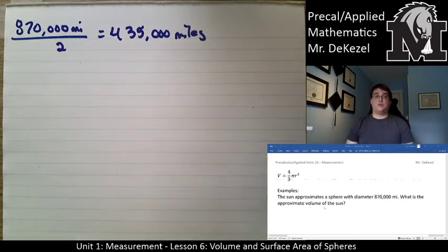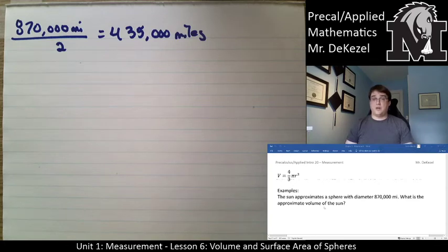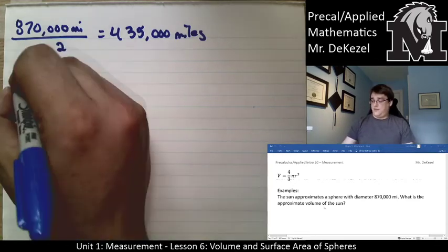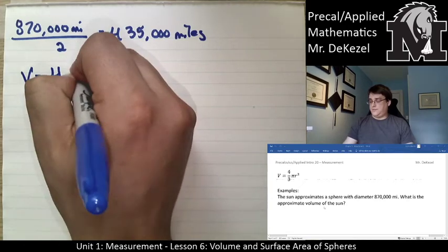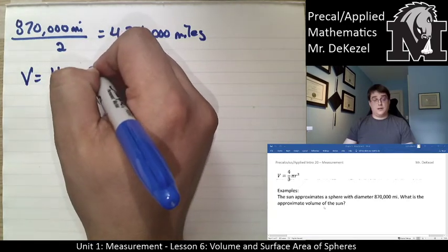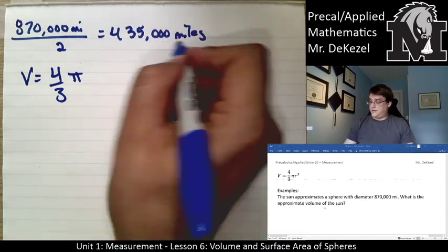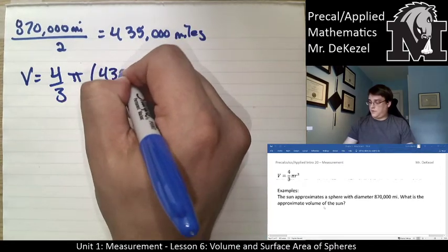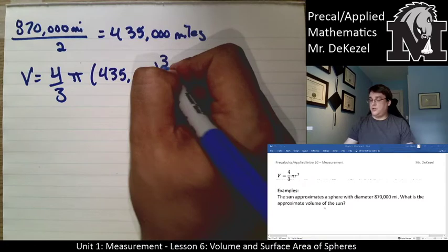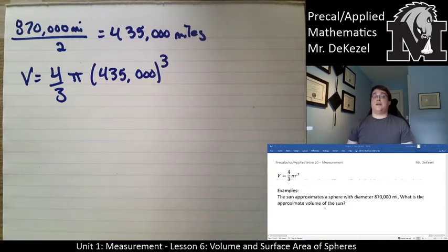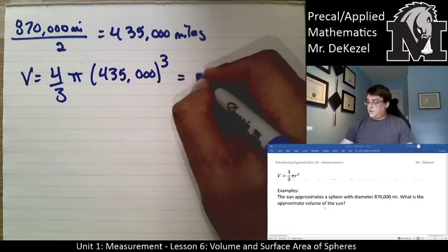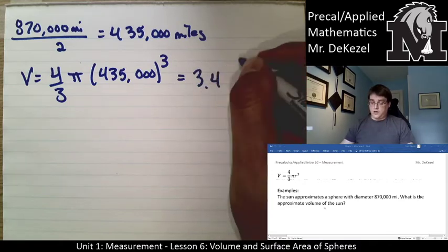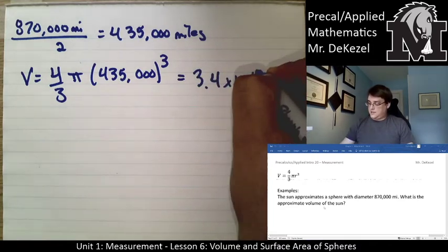Now we are going to use that radius. That is actually the only thing that we need to know to find the volume of a sphere is just the radius. So we have that volume equals 4 over 3 times π multiplied by this number, 435,000 cubed. So you're going to multiply that by itself 3 times, multiply by π, multiply by 4, and divide by 3.